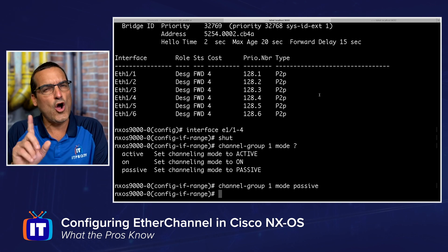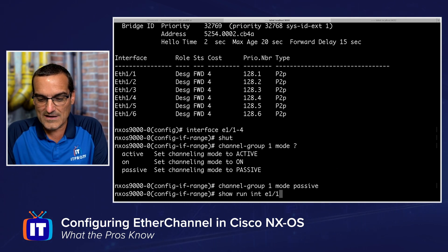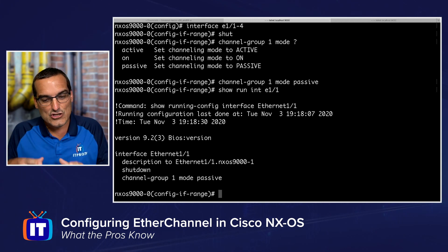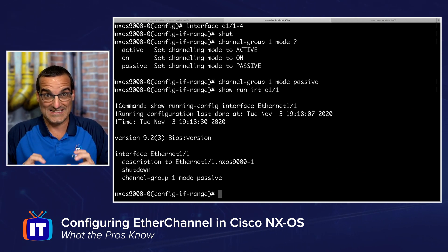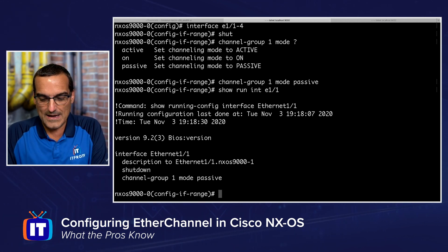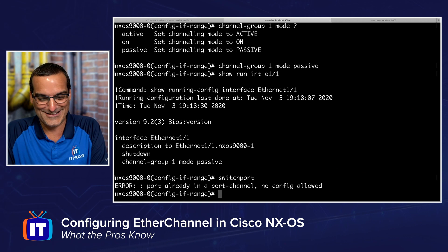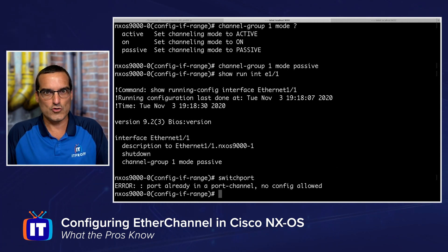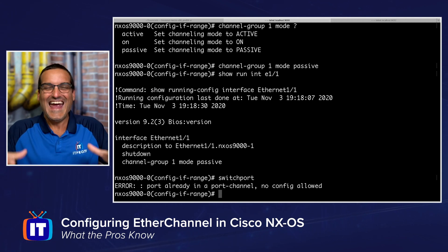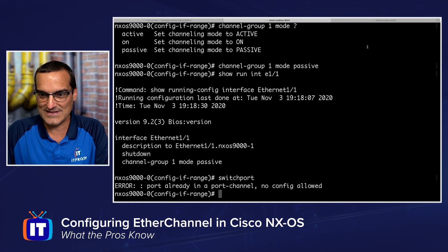That's it — couldn't be much easier. One really important thing though: you want to go in and look at the running configuration on all of your interfaces and make sure that configuration is consistent across all of them. For example, make sure all interfaces are switch ports. You need to do this up front because it won't be allowed once you bundle them together. Make sure all four interfaces are identical in their configuration — quadruplets — and then bundle them together. Glad I remembered to mention that; it's hugely important.